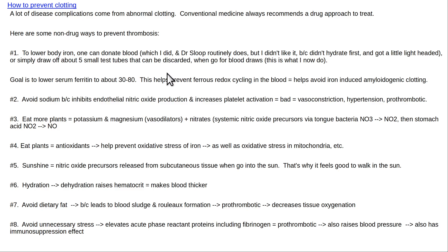Menstruation protects women — it's essentially a therapeutic phlebotomy every month that lowers their hematocrit, making blood less thick, reducing hypertension, atherosclerosis, heart attacks, and stroke. That's likely the main reason women live longer. Women who get hysterectomies at a young age have far more medical problems — their blood becomes physiologically like a man's. To lower iron, you can donate blood. I recommend donating the smallest possible amount and being well hydrated first.